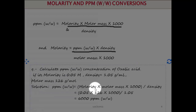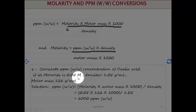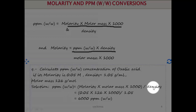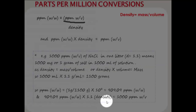Here is a solved example: calculate the ppm weight by weight concentration of oxalic acid. Molarity is given as 0.05 molar, density is 1.05 grams per mL, and the molar mass of oxalic acid dihydrate is 126 grams per mole. Putting values into the formula — molarity × molar mass × 1000 ÷ density — we get 6000 ppm weight by weight.